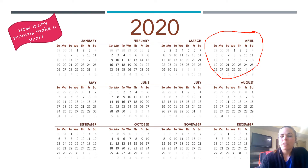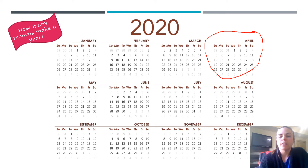Now, how many months make a year? We just answered that — that's 12. There are 12 months in a year.